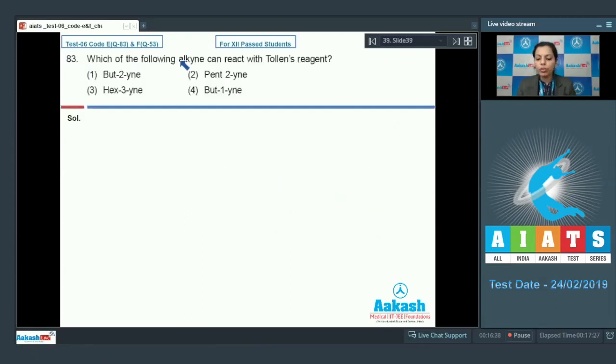Let's take next question. Question number 83. Which of the following alkynes can react with Tollens reagent? If you look at the given options, this is but-2-yne, pent-2-yne, hex-3-yne, and but-1-yne. You should always remember that if we talk about the terminal alkynes, those alkynes have the nature to react with Tollens reagent.